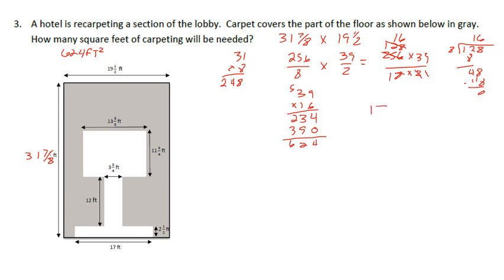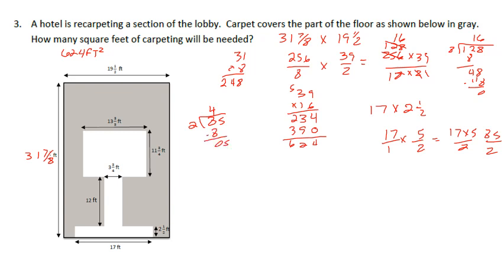To find the individual white rectangles, starting at the bottom: 17 times 2 and a half. 2 and a half is 5 halves, so we have 5 times 17 over 2, which is 85 halves. 85 divided by 2 — 2 goes into 8 four times; bring down 5, 2 goes into 5 two times with remainder 1. That gives 42 and 1 half feet squared.